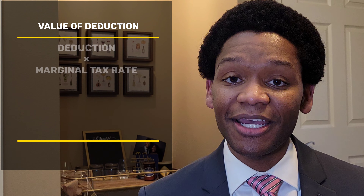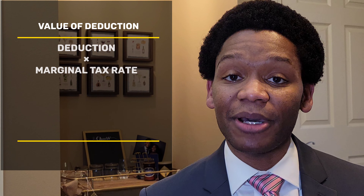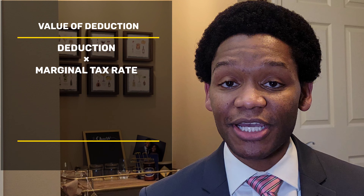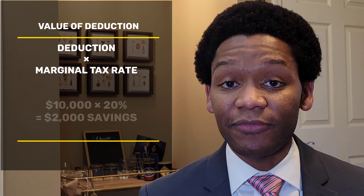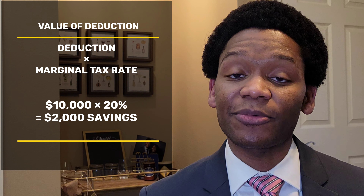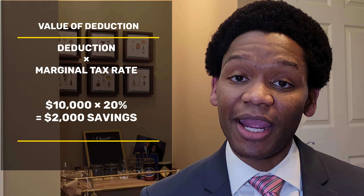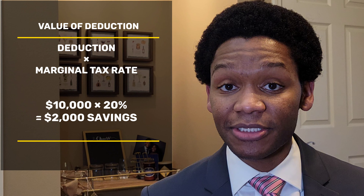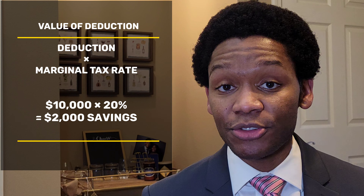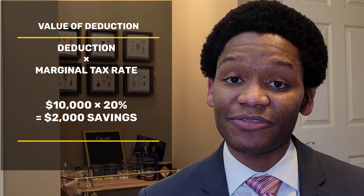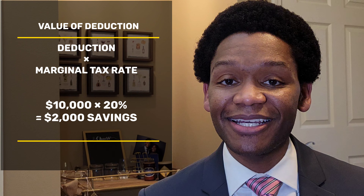This is calculated by taking your deduction and multiplying it by your marginal tax rate. For example, if we have $10,000 of deductions and we're in the 20% bracket, multiply your $10,000 by 0.2 or 20%, and that gives you $2,000 of tax savings.